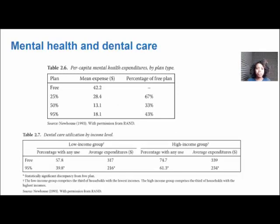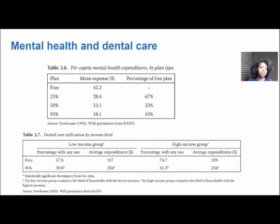Mental health and dental care were especially elastic. The difference between the free care plan and the 95% plan is pretty huge — from an average of $42 down to only $18. When uninsured, people tend to forego mental health care far more substantially. Similarly with dental care, both for high and low income groups, people tend to forego dental care when they have to pay out of pocket.